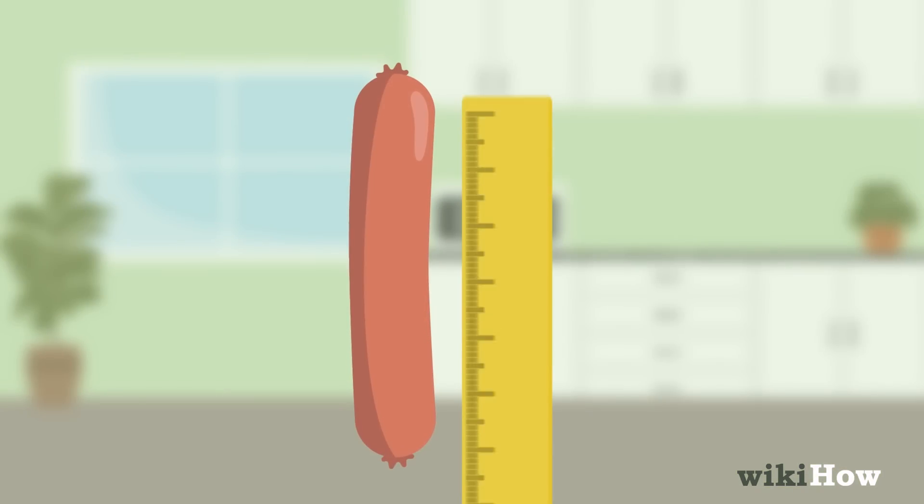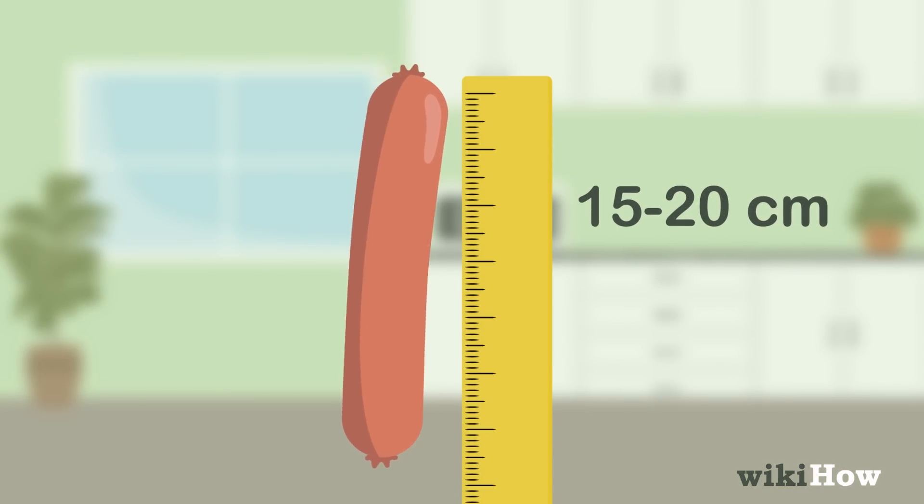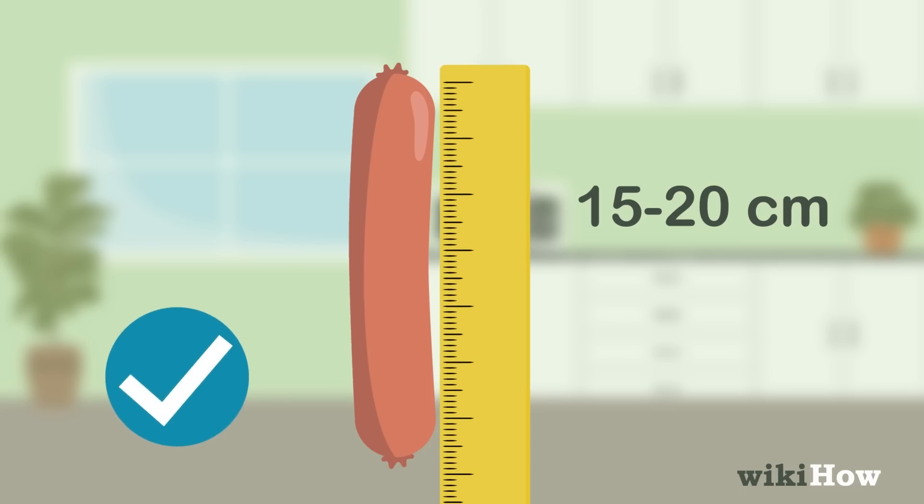To start, choose a long, straight, stiff item between 15 to 20 centimeters, like a frozen hot dog, making sure to measure its length accurately.